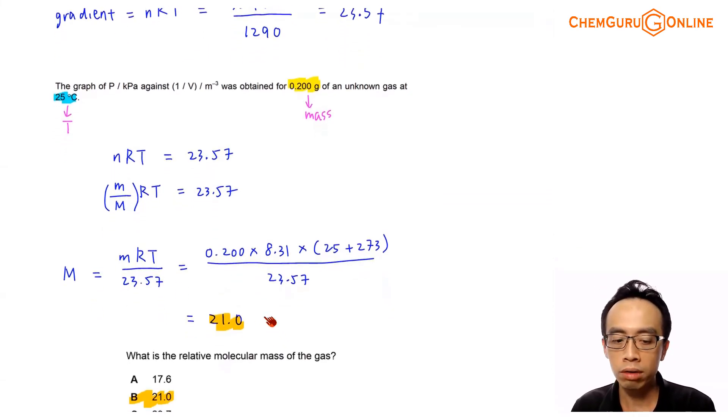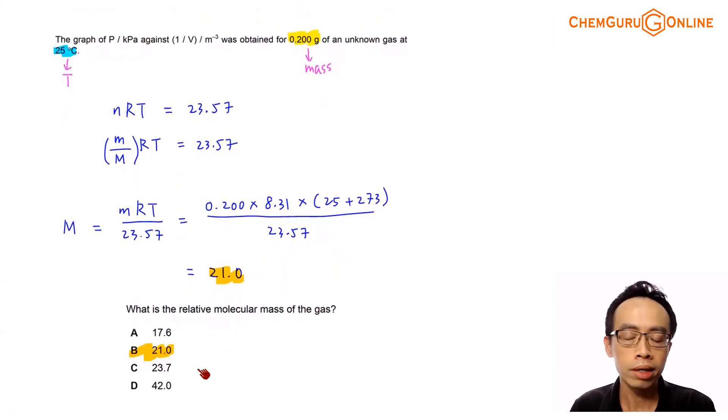And of course once we have calculated the relative molecular mass, then we can compare this against my answer A, B, C, D. Obviously the answer will be option B.